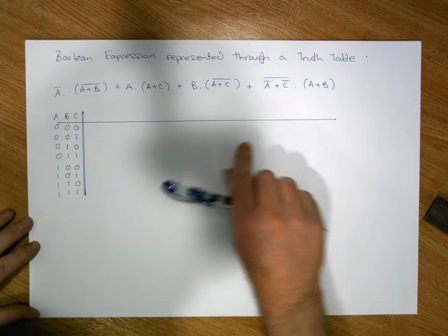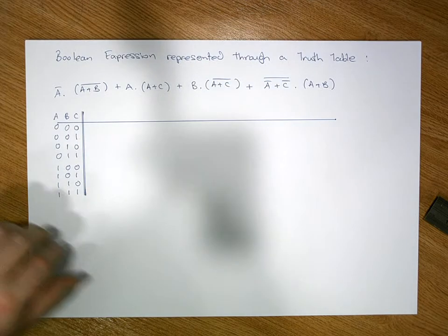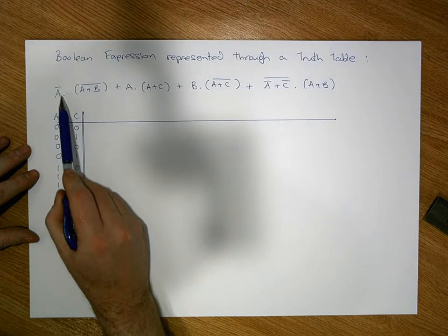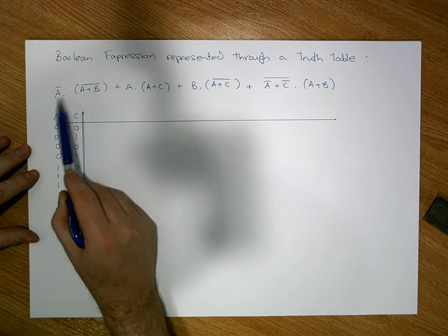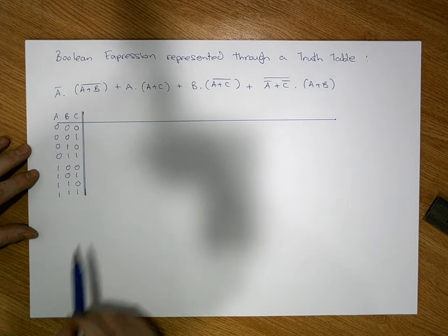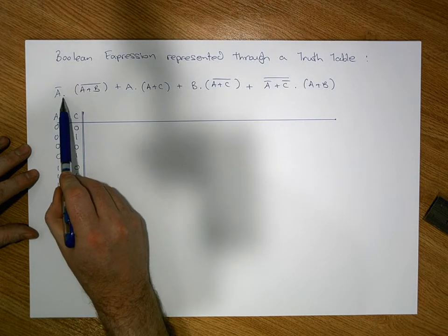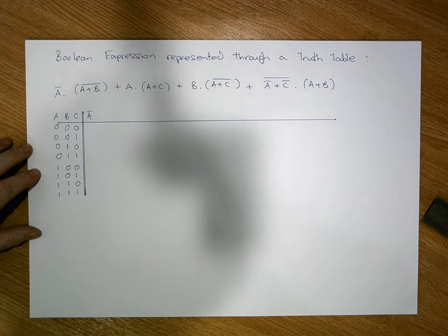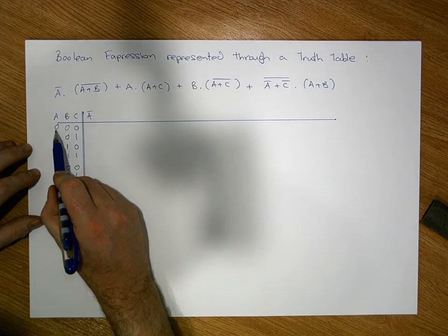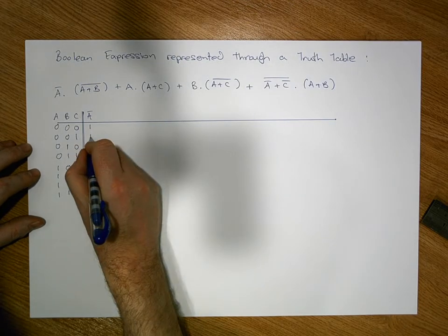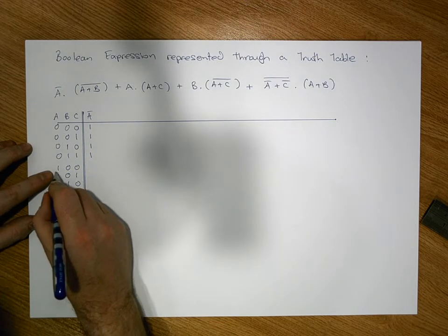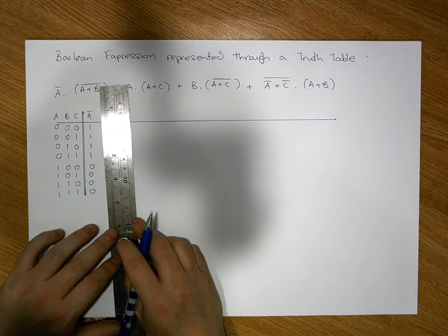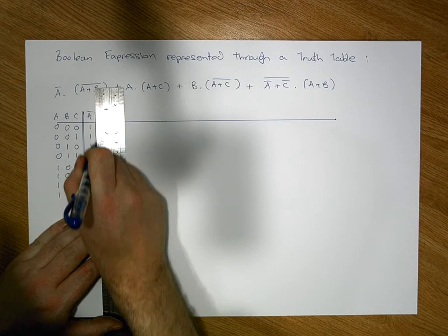These are all the possible states the three-input system could be in at any moment in time. When we pass these states through the Boolean expression, what is the output going to be? Taking the first term — A-bar ANDed with (A OR B)-bar — we first calculate A-bar. The negation of A is simply: when A is zero it becomes one, and when A is one it becomes zero. That gives us our A-bar column.